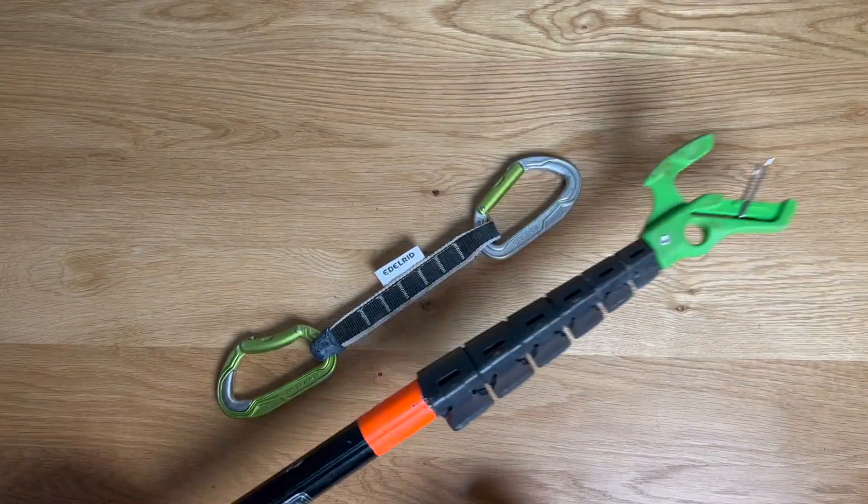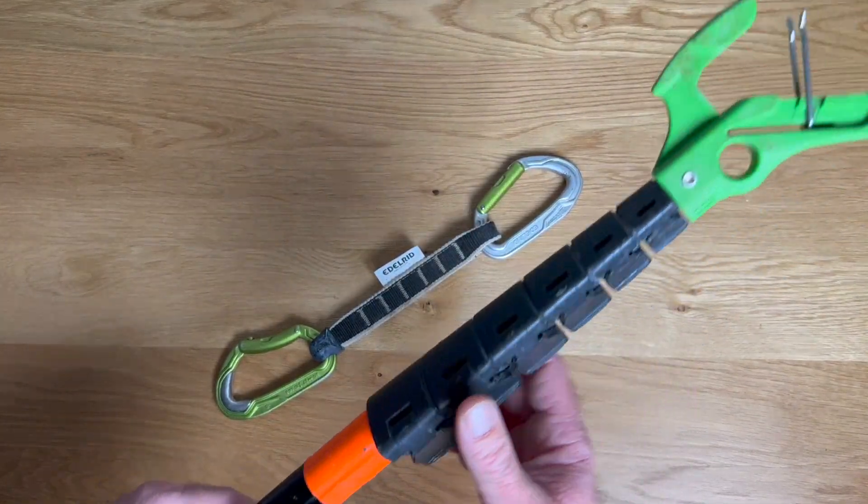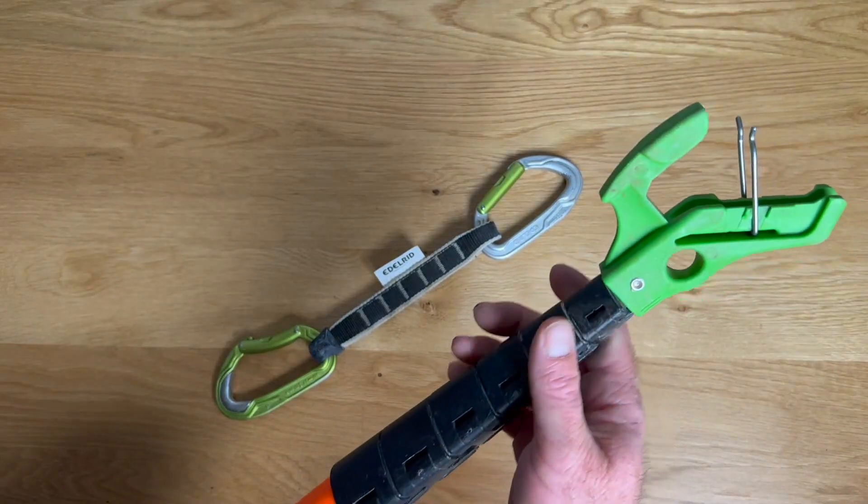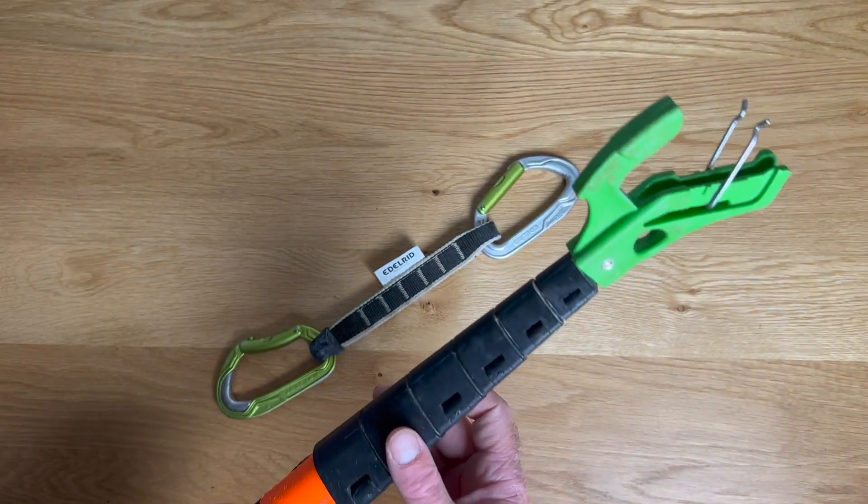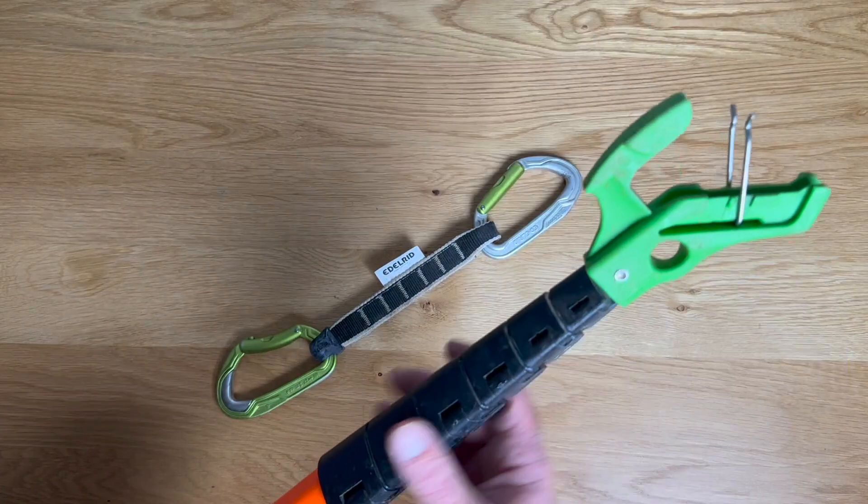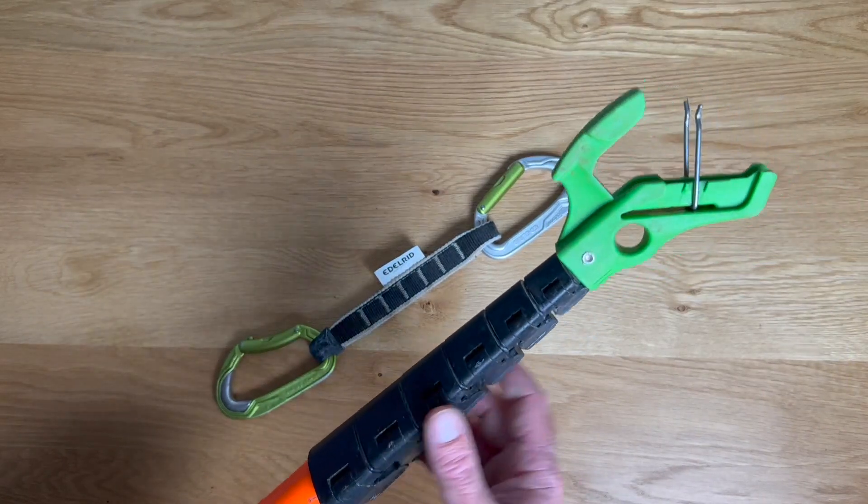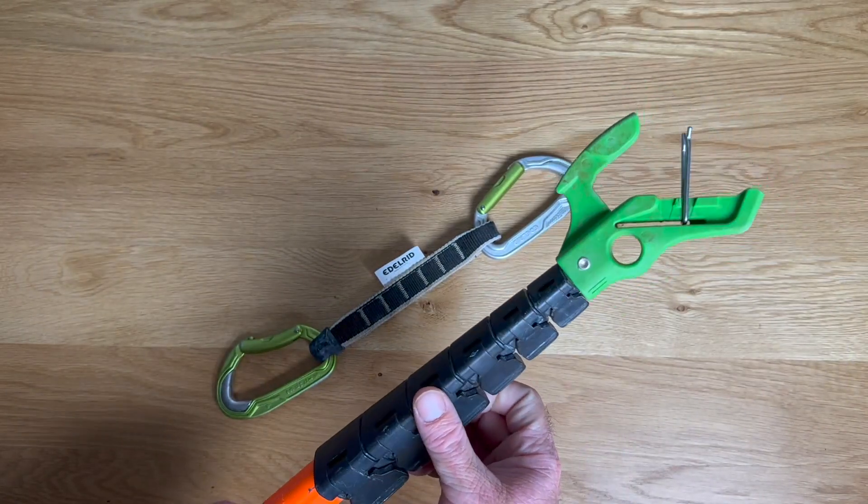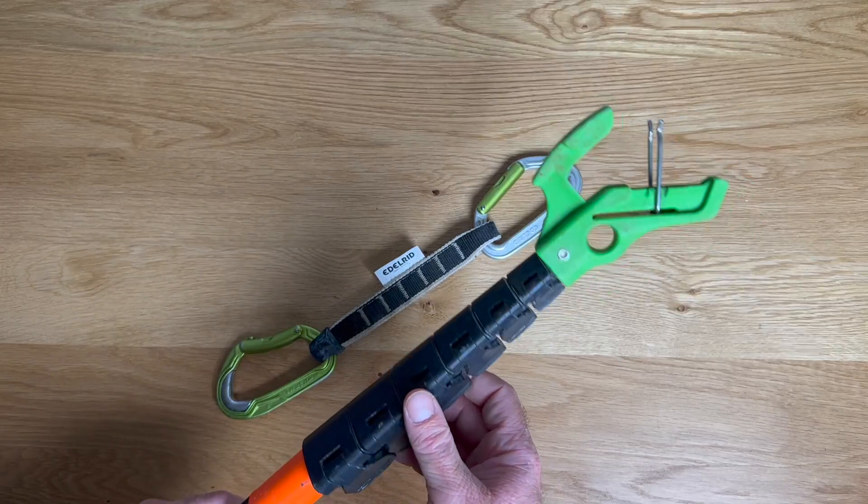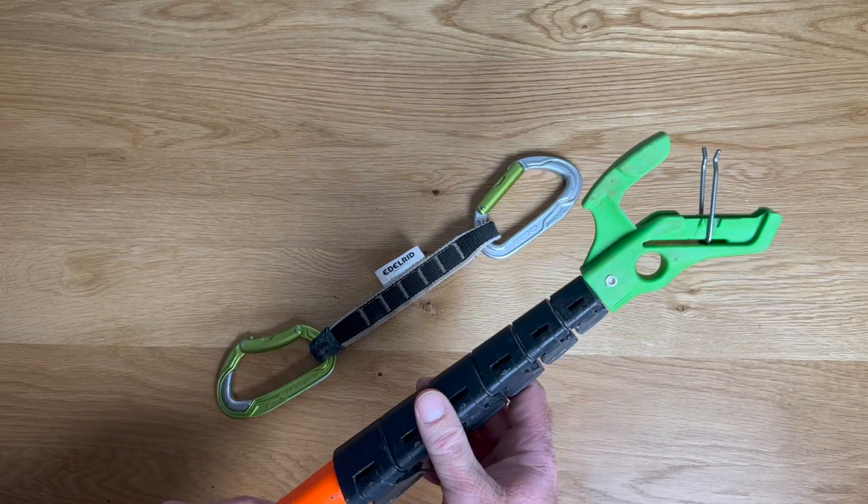Hey, Garen here with a quick look at the Trango Beta Stick Evo Stick Clip. This goes with me on just about every sport cragging trip I take because it's a very good way to make sure you safely get that first bolt on some of the dicier starts and scarier climbs out there on the wall.